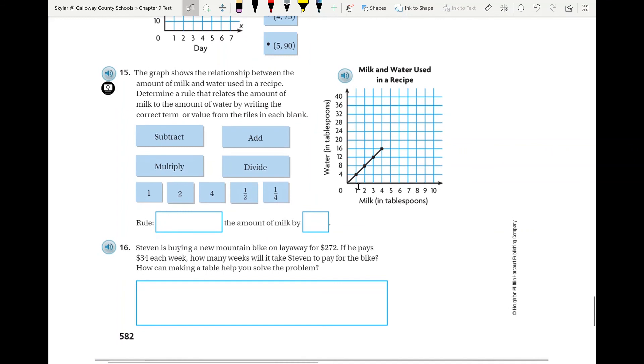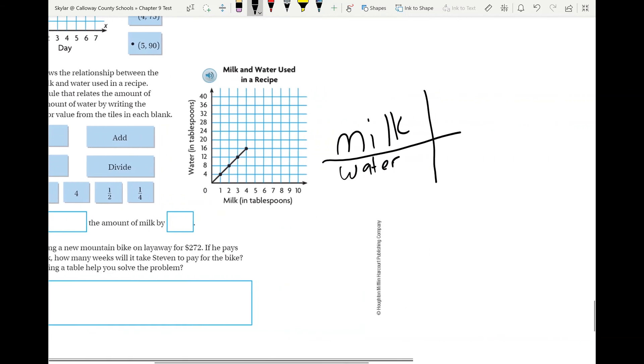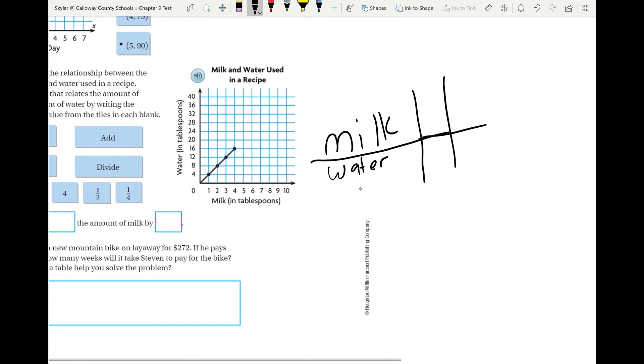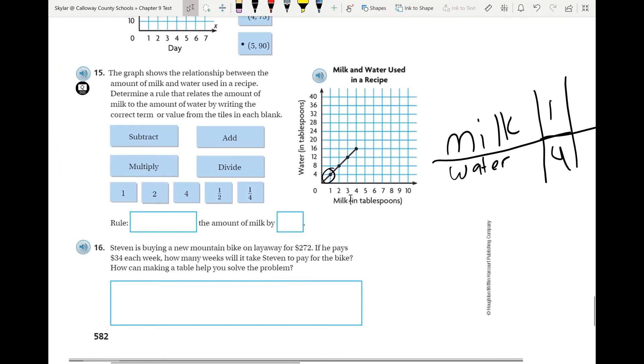And then finally, 15 and 16. So the graph shows a relationship between the amount of milk and water used in a recipe. So what you'll have to do is make a chart, and I'll start that chart off for you. And you'll take those ordered pairs. So you can look at the first one: whenever you have this one, you have one tablespoon of milk and you have four tablespoons of water. So use all of those ordered pairs to fill out the rest of your chart. Then you can find your rule for number 15.